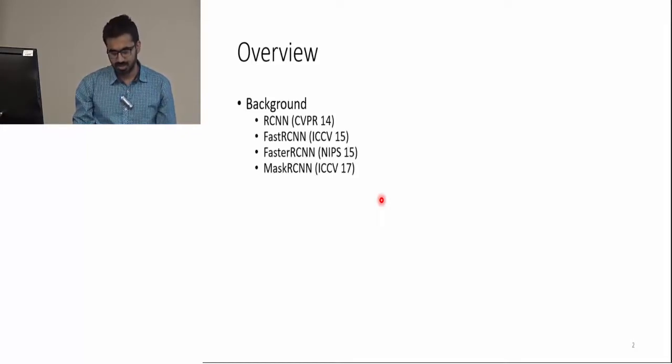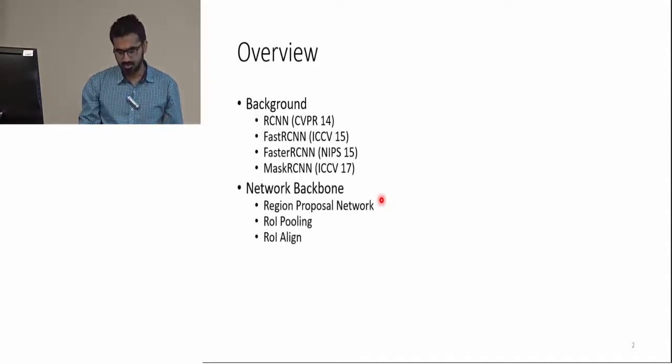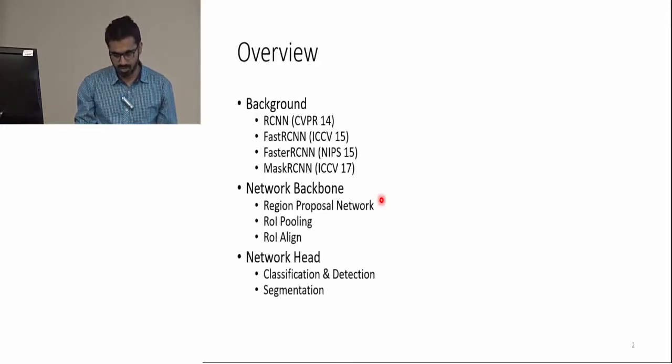Here's the overview of my presentation. I will start with some background. There are four important papers worth mentioning: R-CNN, Fast R-CNN, Faster R-CNN, and Mask R-CNN. Then I will discuss the details of Mask R-CNN, including its network backbone and the network head, and finally I will discuss the experiments.